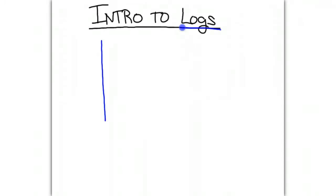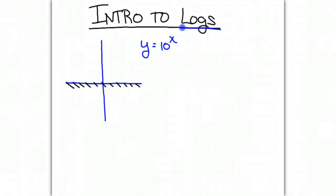We're going to start with an exponential function, y equals 10 to the x. We know what the graph of this is going to look like. We have an asymptote along the x-axis, and we can create a few points that we know are sitting on the graph. We'll have the point (0, 1), the point (1, 10), and the point (2, 100).